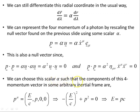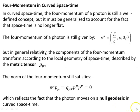Now we can choose this scalar alpha such that the components of this four momentum vector in some arbitrary inertial frame are P mu is E, 0, and see this is motion along parallel to the x-axis. Magnitude squared is minus E squared with the Minkowski metric, E on C squared plus P squared equals zero, implies that E equals P times C, as we know for a photon.